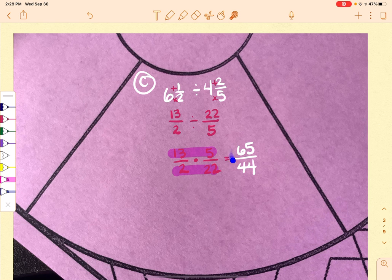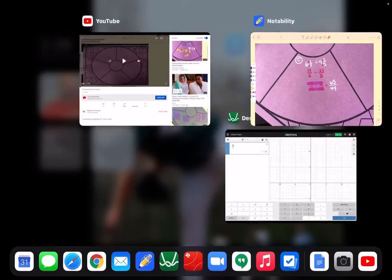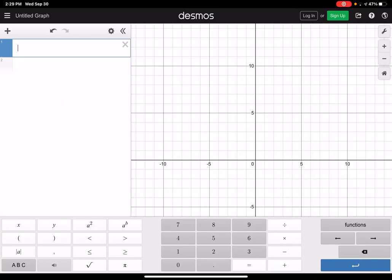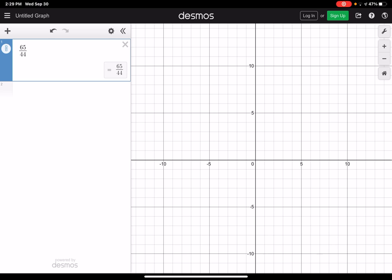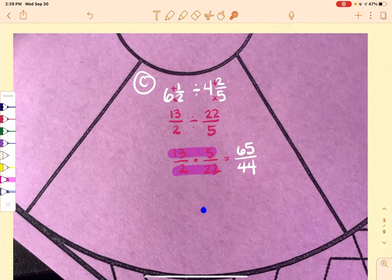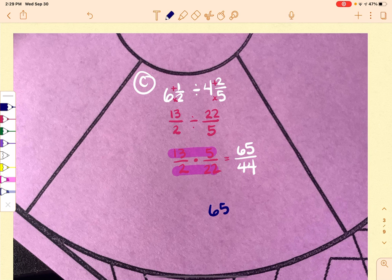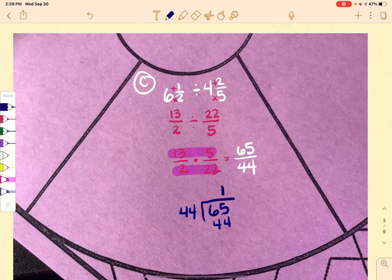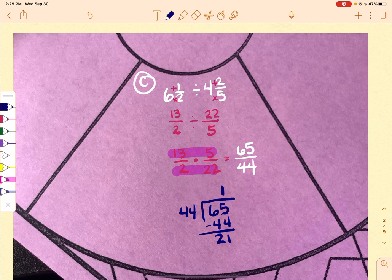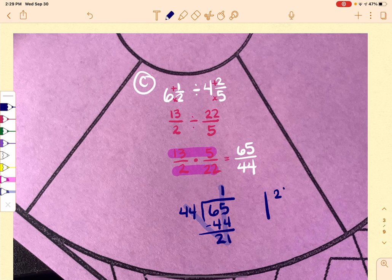Now we're going to take this back to Desmos and put it in. So 65 over 44 doesn't change. So it's as reduced as it can, but the top, because it is larger than the bottom, we're going to have to divide. So I'm going to go through and divide it out. So I know it's going to go in there once with 21 left over. So it's 1 and 21 over 44.